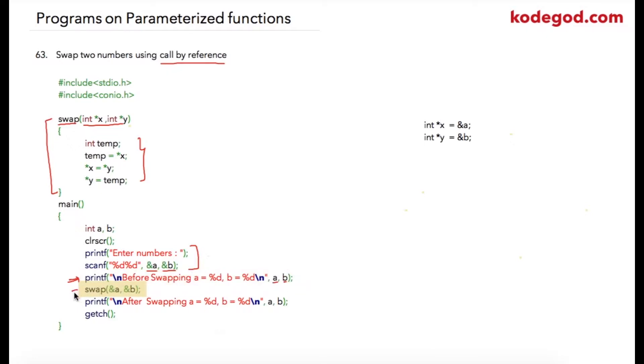And then I am calling my swap function. Notice that this time instead of passing a and b directly, I am passing address of a and address of b. So technically what is happening over here when we make this call...